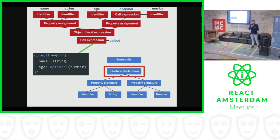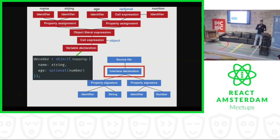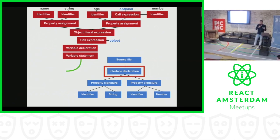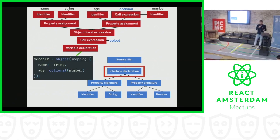So it checks if it's an object with name and age. The only thing we have to do is to wrap it into a variable — a constant decoder equals.